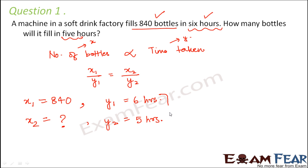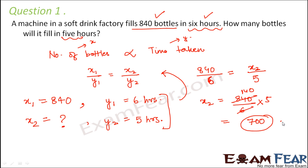So now putting these values in this equation, x1 is 840 divided by y1 which is 6 is equal to x2 which is not known divided by y2 which is 5. So x2 is equal to 840 divided by 6 into 5. So 140 into 5 is 700. Therefore 700 bottles will be filled in 5 hours.